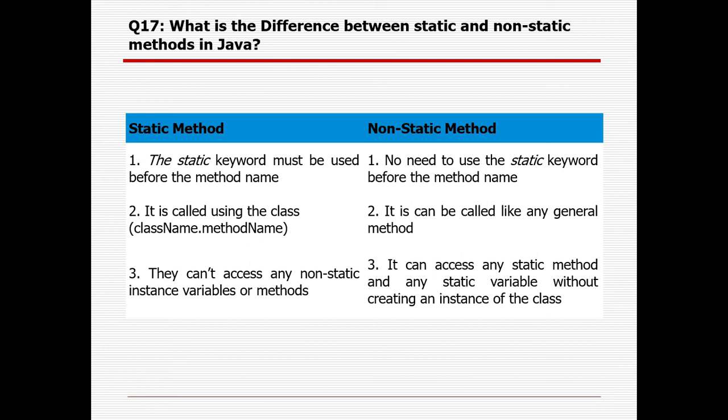What is the difference between static and non-static? Static is a non-access modifier. When you declare any block, method, or variable as static, memory is allocated immediately. No object or instance needs to be created — you can access it directly using the class name dot method name. For non-static methods, they are called like any general method using an object. Static methods cannot access non-static instance variables or methods, whereas non-static methods can access any static method or static variable without creating an instance.